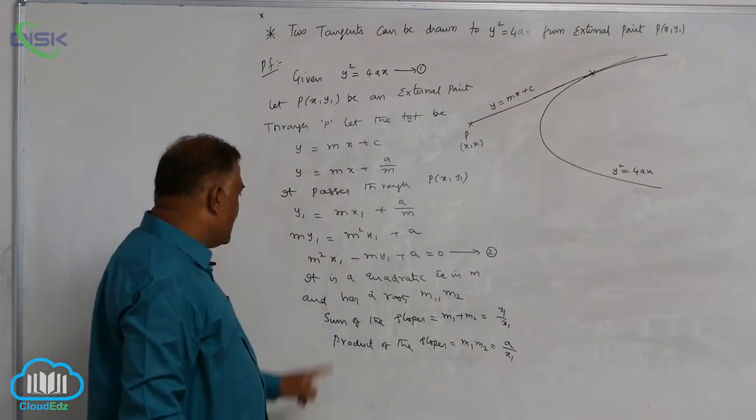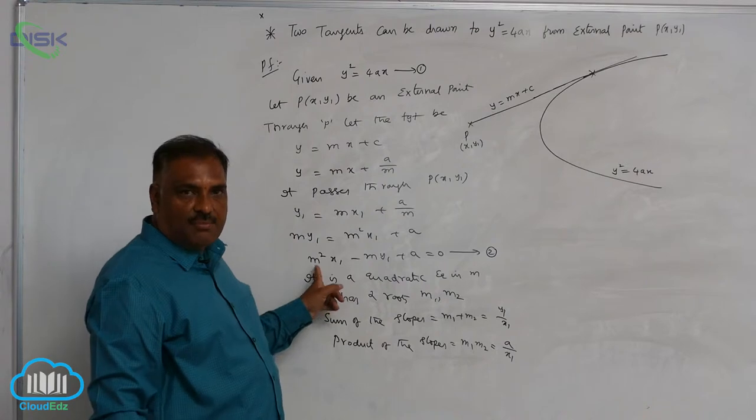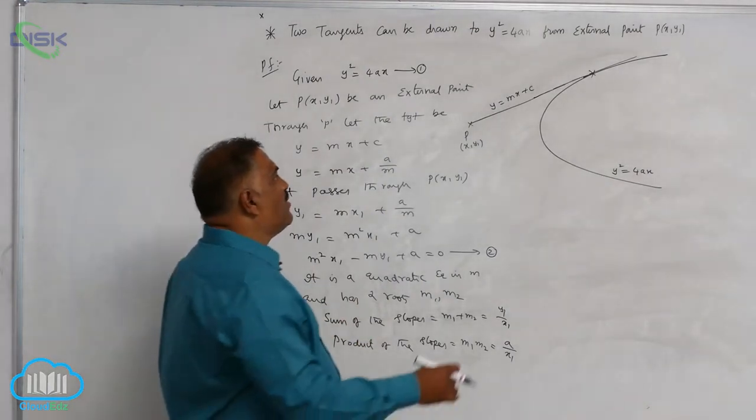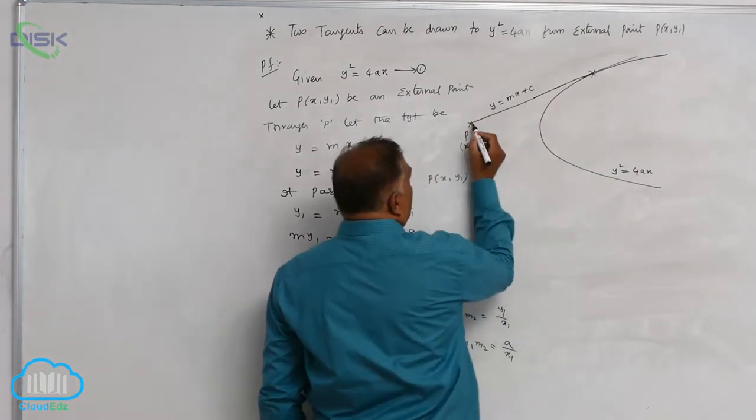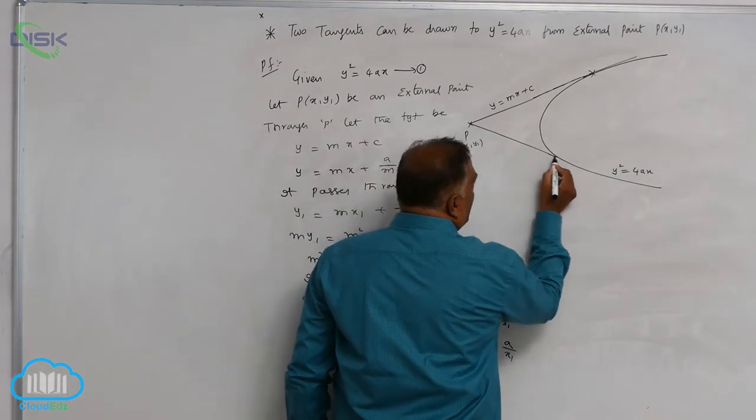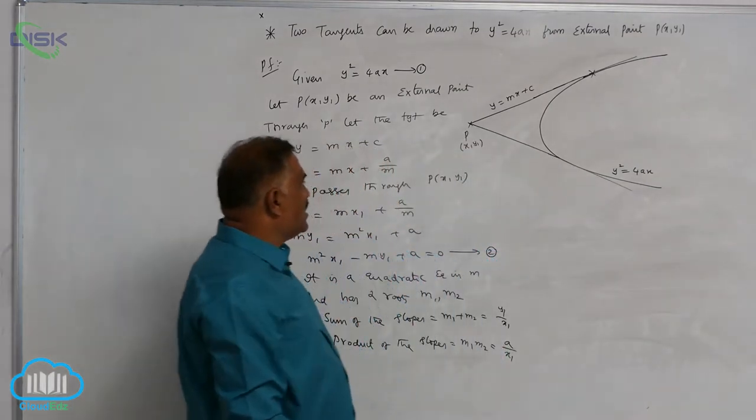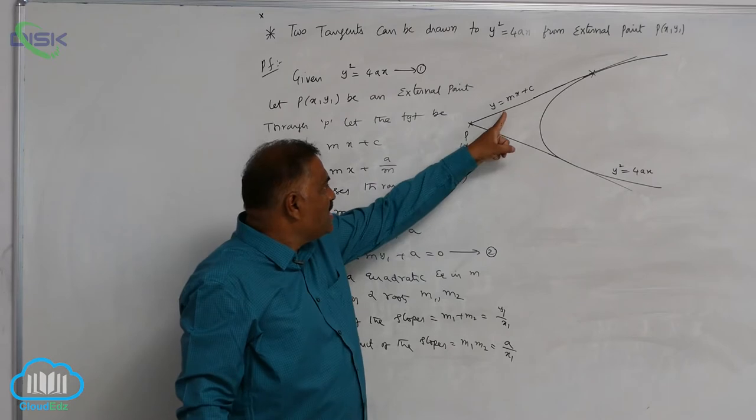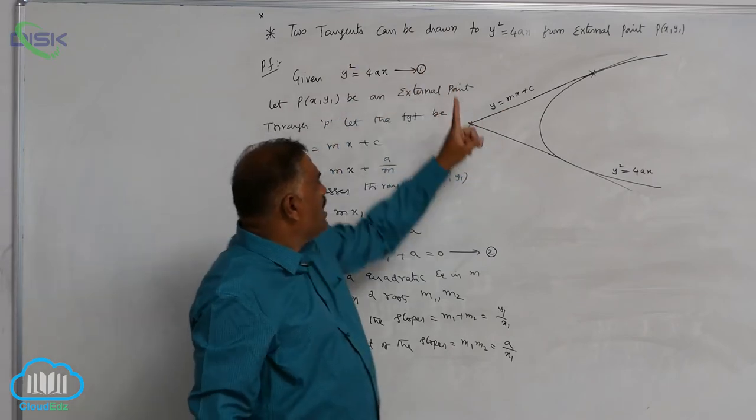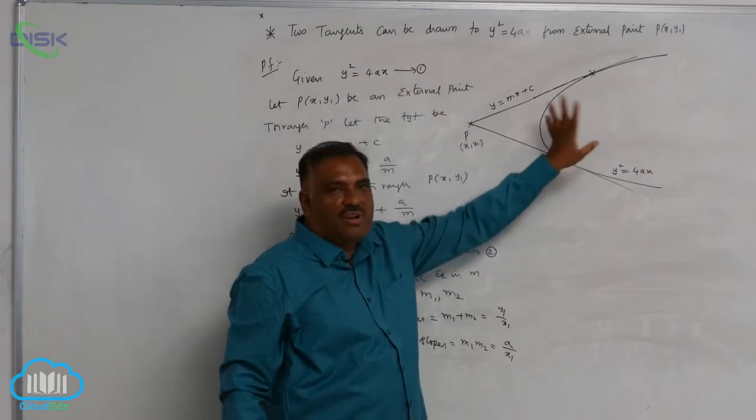You can see very clearly, since it is a quadratic in m, it has two values. For one value, one line will be there. For one more value, one line will be there. Thus, we are getting two tangents can be drawn from external point to the given parabola.